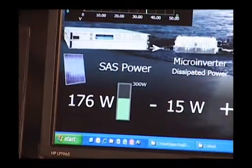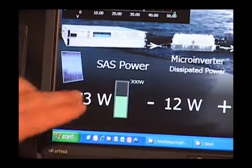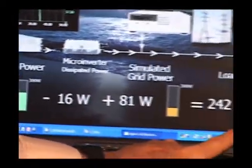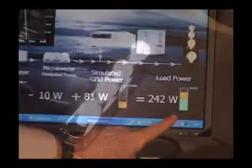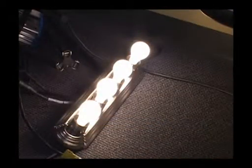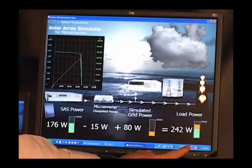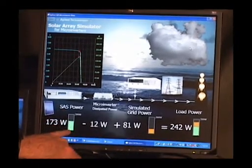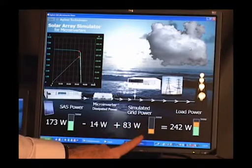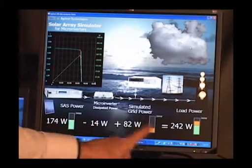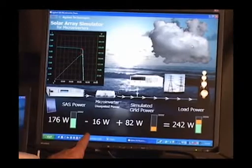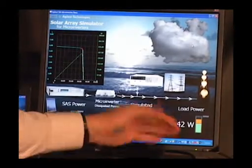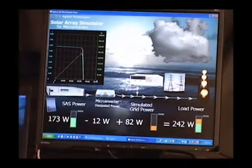Another thing I'd like to point out to you is what happens with the power here. We've got a constant amount of power flowing into the light bulbs I have set up on the side, about 242 watts. And that total power has to come from either the solar array simulator or the grid. The sum of these two minus a little bit that's dissipated in the microinverter itself has to equal that total load power which is constant.